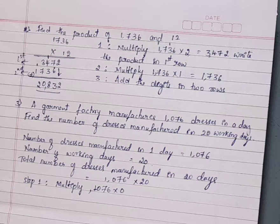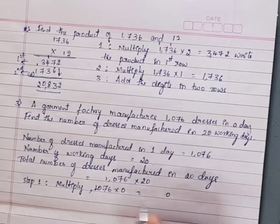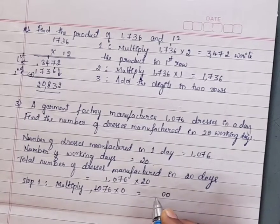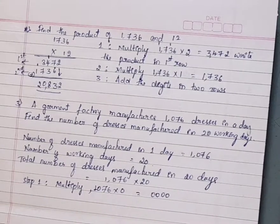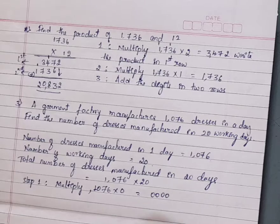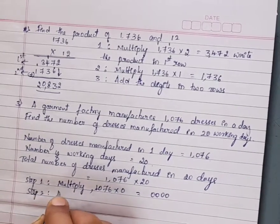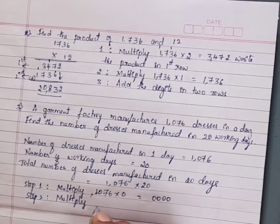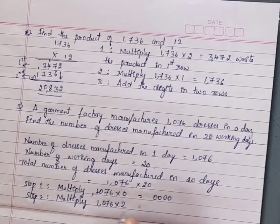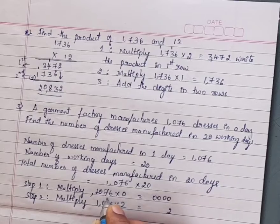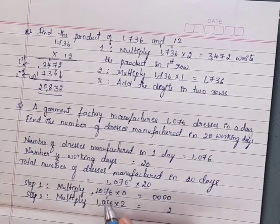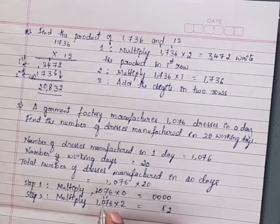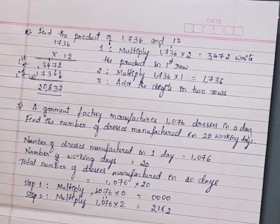Step 1: Multiply 1076 into 0. 0 × 6 = 0, 0 × 7 = 0, 0 × 0 = 0, 0 × 1 = 0. Write this product 0000 in the first row. Step 2: Multiply 1076 into 2. 2 × 6 = 12, carry 1. 2 × 7 = 14, plus 1 = 15, carry 1. 2 × 0 = 0, plus 1 = 1. 2 × 1 = 2. Product is 2152. Write in the second row starting from the tens place.